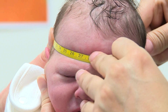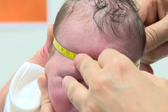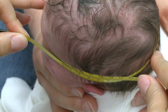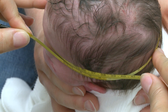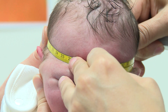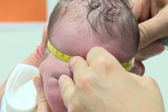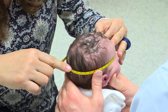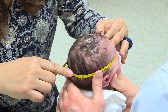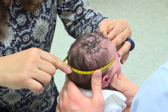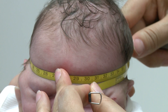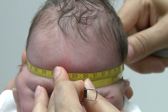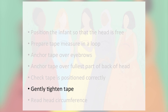To ensure the tape is stable, the measurer can anchor it at the front and the back of the head using the middle finger of each hand. Once the tape is in the correct position, the measurer gently tightens the tape to compress any hair and fat. In newborns, a great deal of care should be taken not to tighten the tape too much.